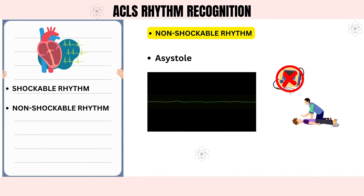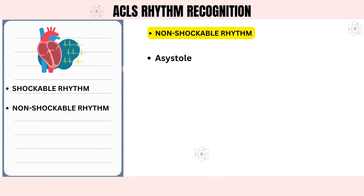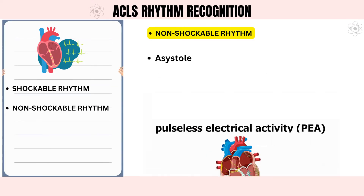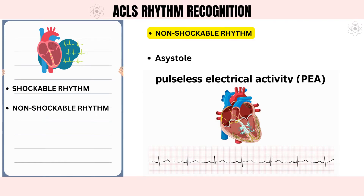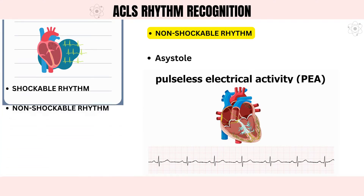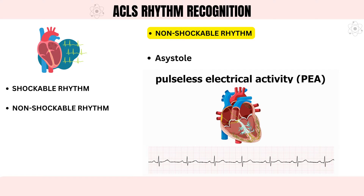Next is pulseless electrical activity, or PEA — another type of irregular heartbeat caused by an electrical problem in the heart. In PEA, the heart's electrical activity is too weak to continue pumping blood throughout the body. Like with asystole, an AED will not correct this arrhythmia, and CPR should be administered as soon as possible to provide the best patient outcome.